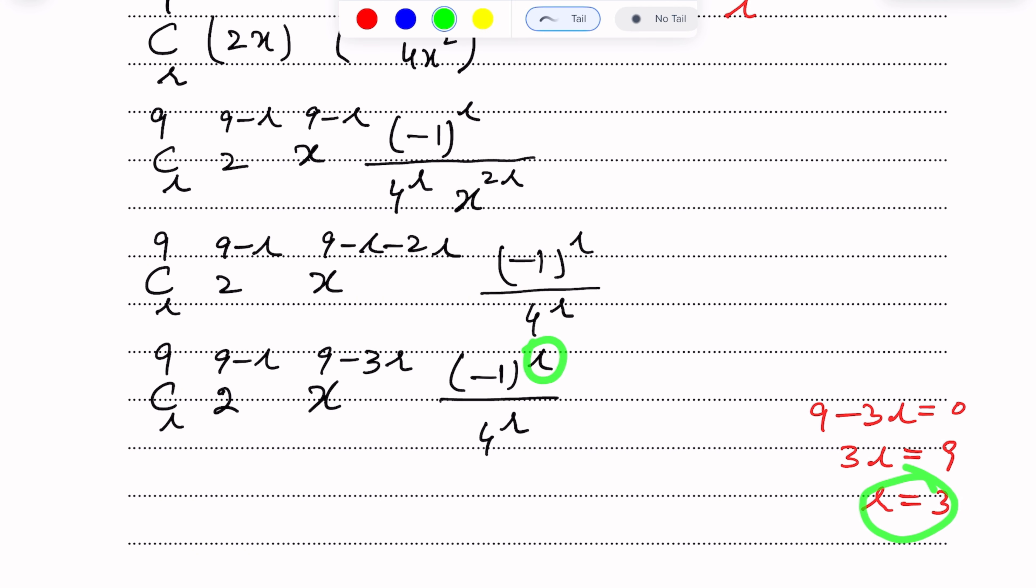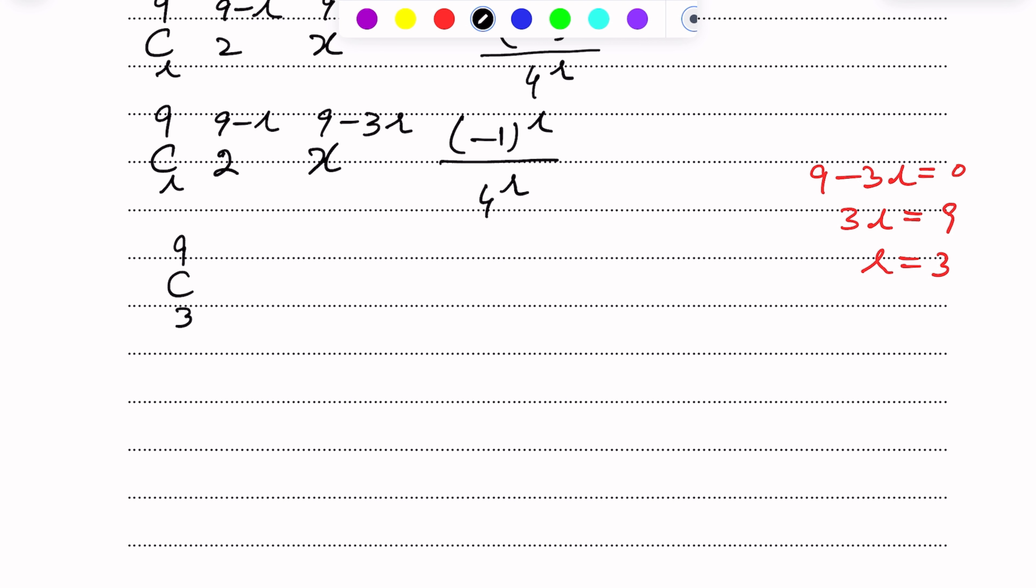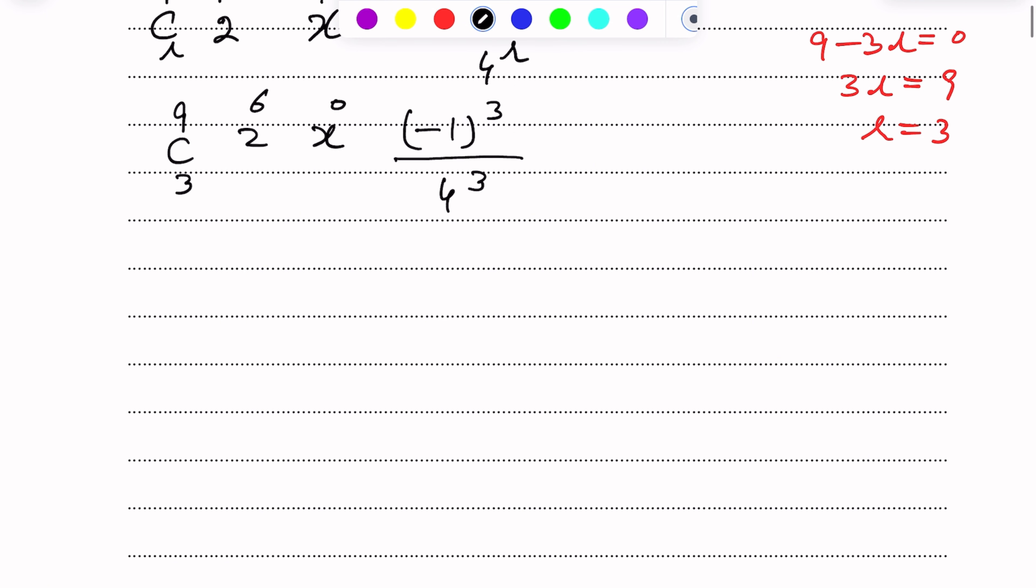So we get 9C3 × 2^(9-3) = 2^6 × x^0. Next is (-1)^3 / 4^3. If we simplify: 9C3 = 84, multiply by 2^6 = 64, x^0 = 1. Then (-1)^3 = -1 over 4^3 = 64.